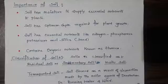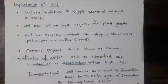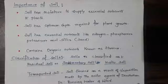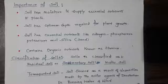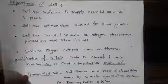The word in-situ means 'in situation,' meaning the soil found at the place of its origin. Whereas transported soil is the soil formed as a result of depositions made by external agents of denudation. Basically, running water is an external agent of denudation, which on a large scale is responsible for the formation of soil on the surface of the earth.